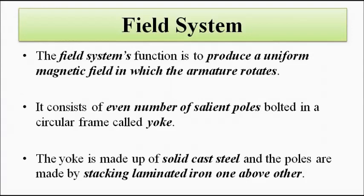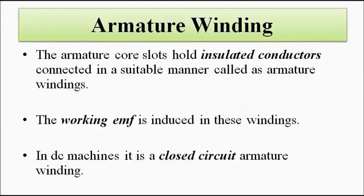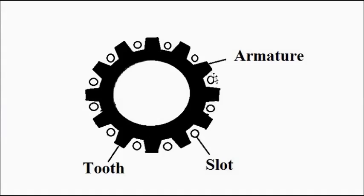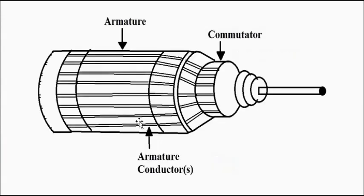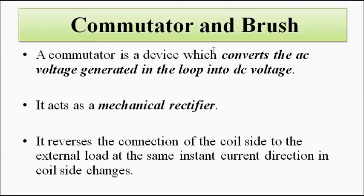So we have covered the field system and the armature core and windings — the armature core with slots into which the armature conductors or windings are inserted. Now, commutator and brush: we have already discussed the working principle in a separate video. The commutator is basically a device which converts the alternating voltage generated in the loop into DC voltage — essentially a mechanical rectifier.